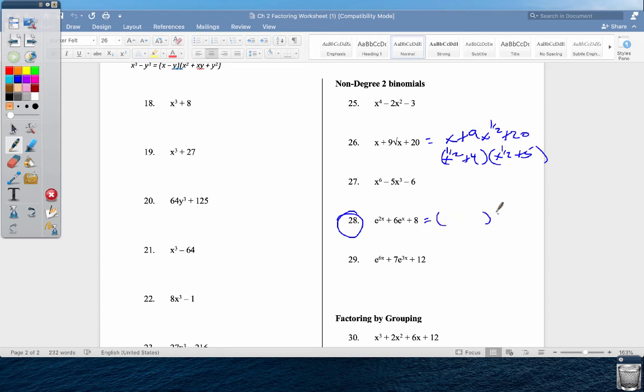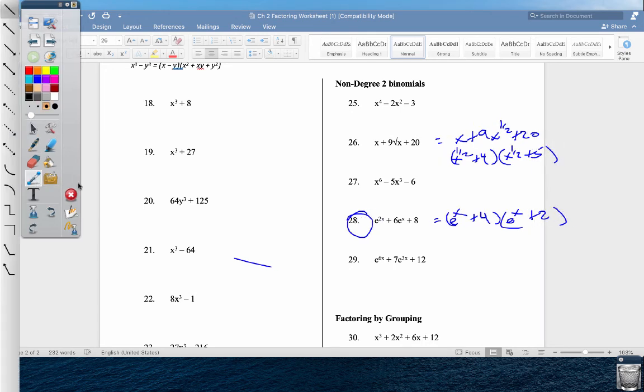This is the square root of x plus four and the square root of x plus five. This one, e^(2x) plus 6e^x, as long as that's twice as much as that, we can factor. And then you're just splitting up e^x and e^x, and then you have what do you multiply for eight and add for six? It's four and two, and that's your answer.